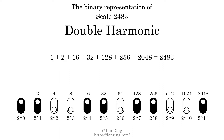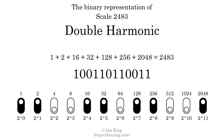The scale number not only enumerates the scale with a unique index, but it also literally describes the tonal content of the scale, represented as a binary number in base 2. The scale number is 1 0 0 1 1 0 1 1 0 1 0 1 1.